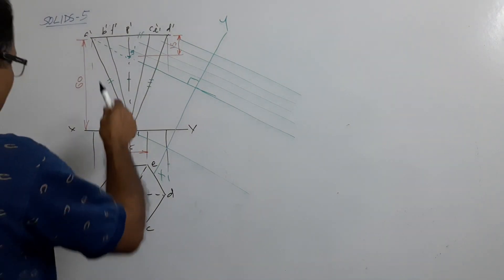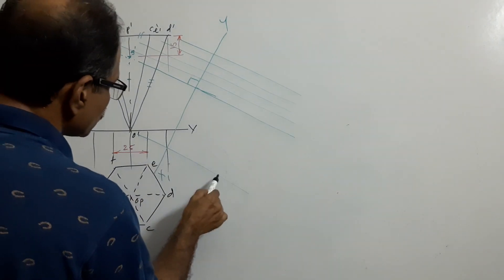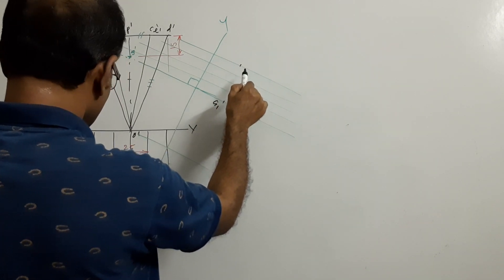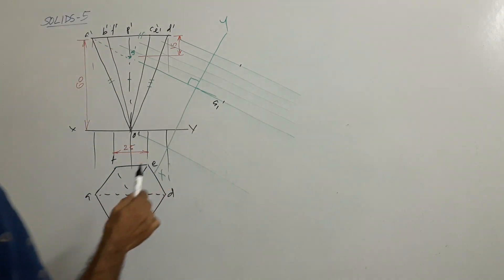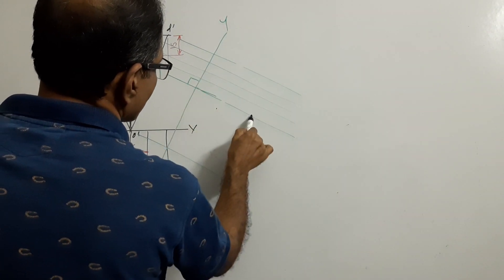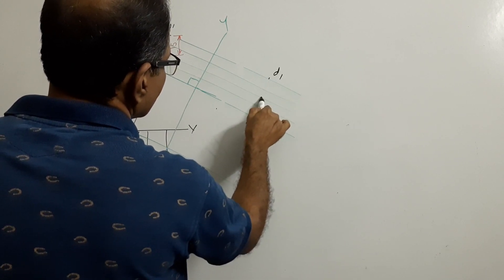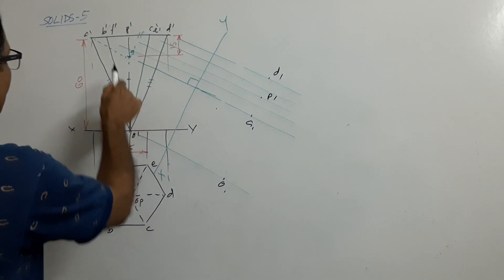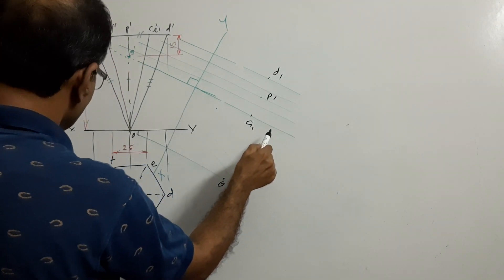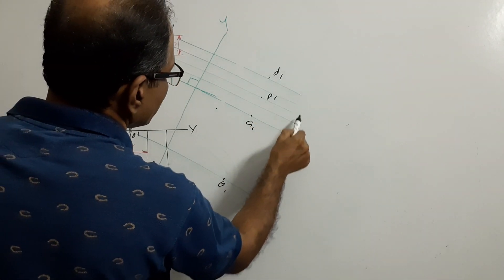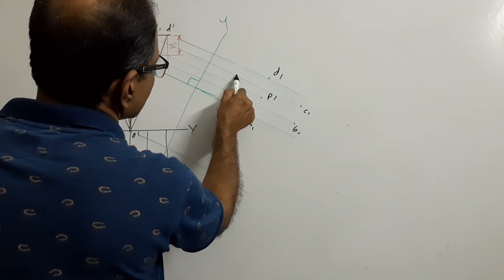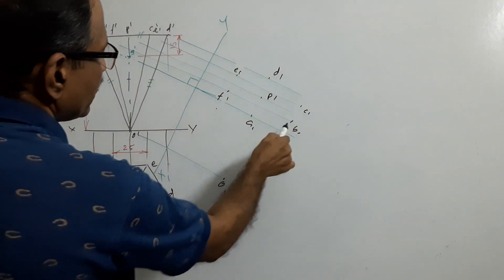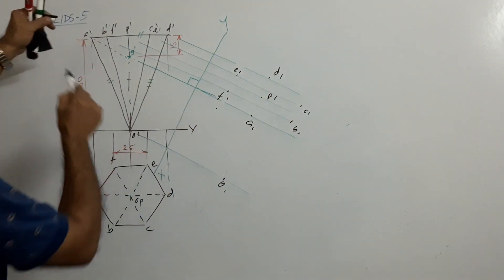Take the distances: A is this much below, O is the same distance, D is the same distance. Mark A1, B1, P1, O1, then B1, C1, E1, F1. That's all — A, B, C, D, E, F, O, P — connect them. When you look from here, the full base will be visible.